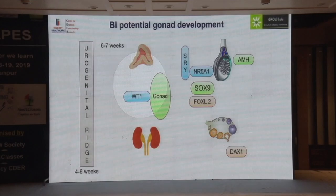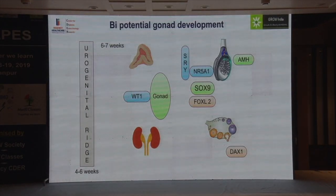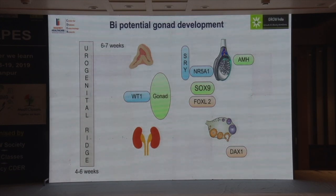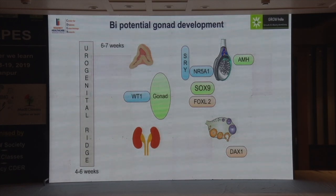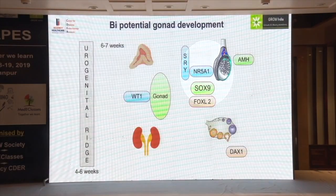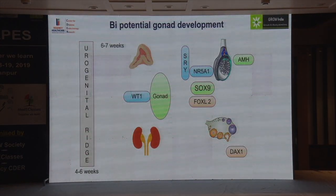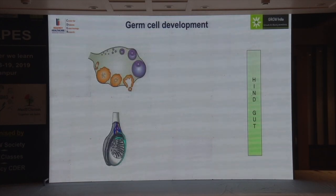Key genes to remember: WT1, because it is associated with Denys-Drash and Frasier syndrome — any child with XY DSD must be carefully assessed for renal abnormalities. NR5A1 must also be remembered because its defects will result in adrenal abnormalities. Now, having developed the gonad into either a testis or ovary, we move on to germ cells.